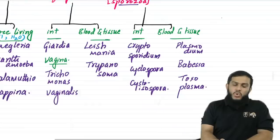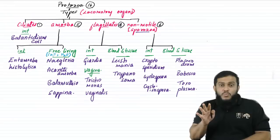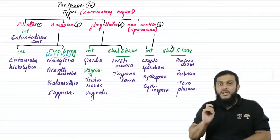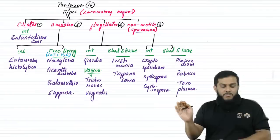This is the blueprint of protozoa — all protozoa in one place. Four types: ciliates, amoeba, flagellates, and non-motile (sporozoa). Most protozoa exist in two morphological forms: trophozoit and cyst. They infect humans in the form of cyst — cyst is the infective form. If cyst is present, they always infect as cyst; they cannot infect as trophozoit when cyst is available.